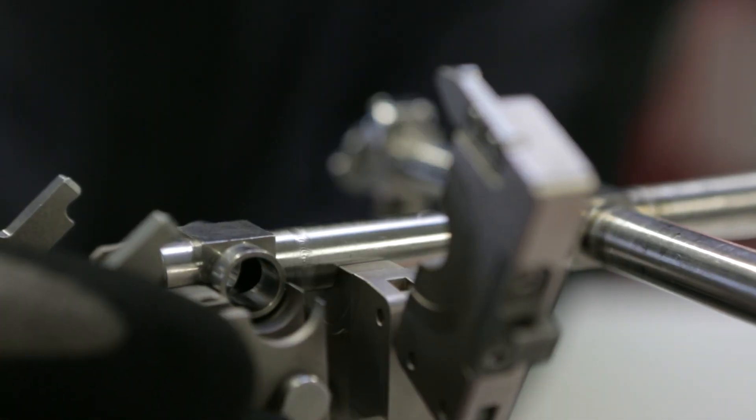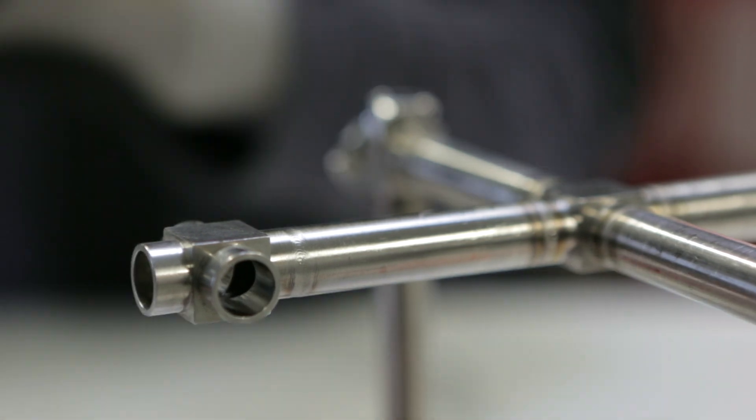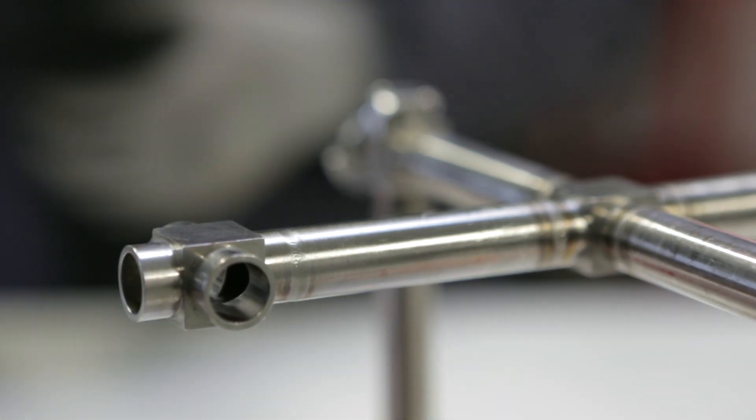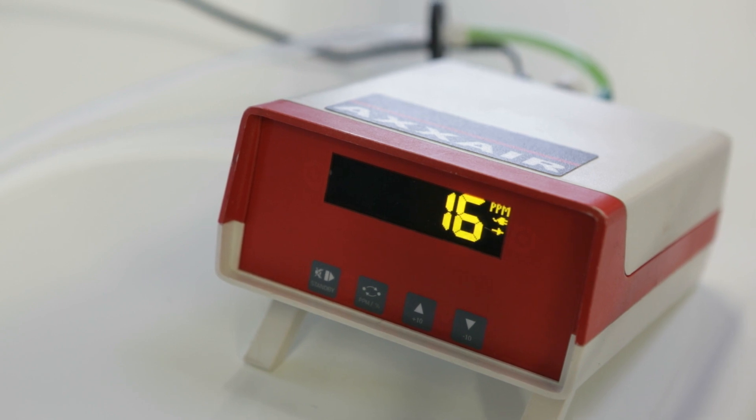To achieve a quality weld, it is recommended to use an oxygen meter in order to get an efficient current inerting with an oxygen level lower than 20 ppm.